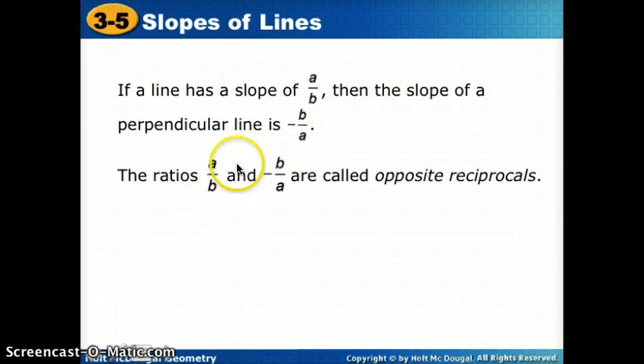Because we took this number to take a reciprocal, we flip the fraction over. And if this is positive, this is negative. So I make this one negative. So what we're saying is that perpendicular lines have opposite reciprocal slopes.